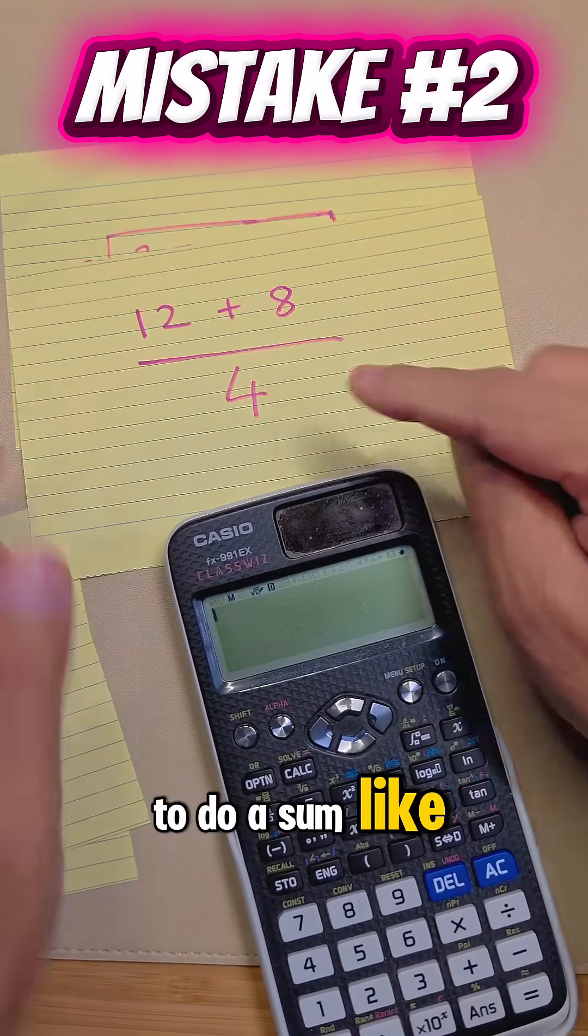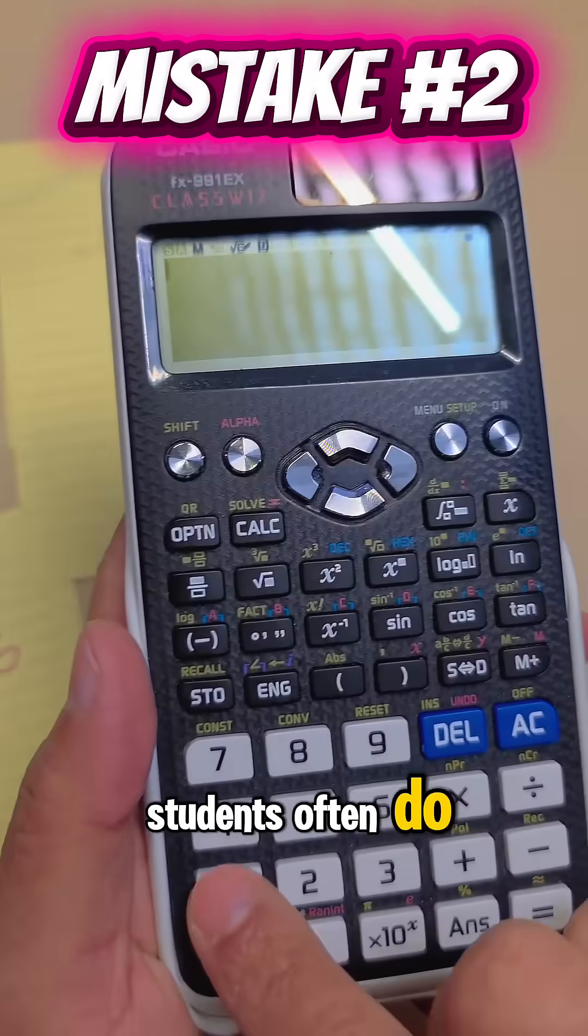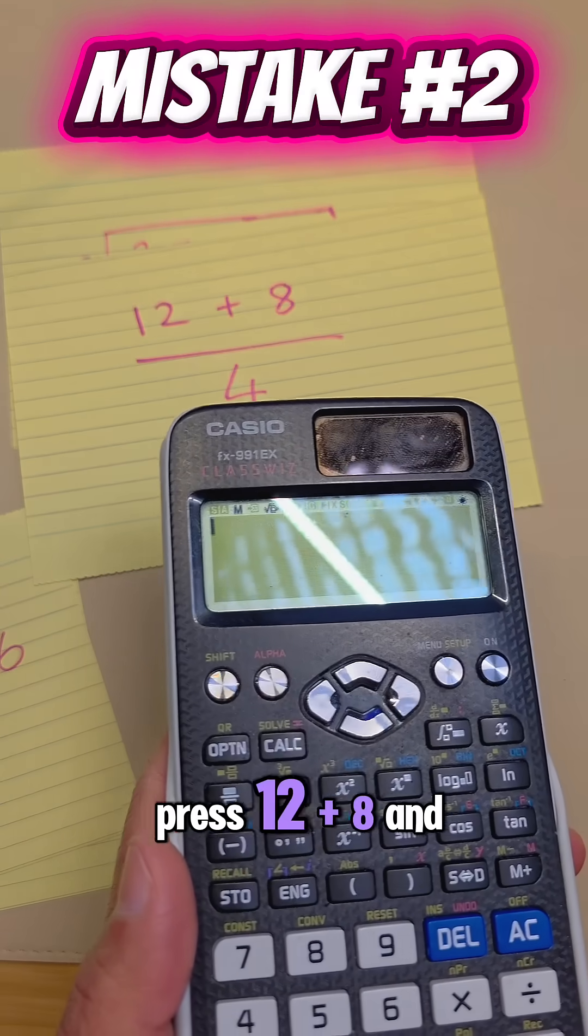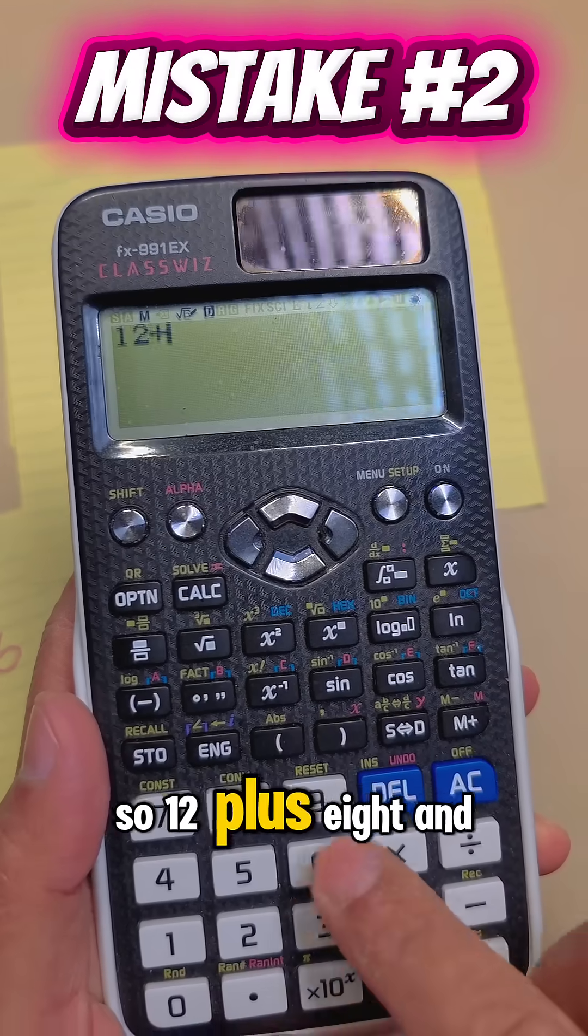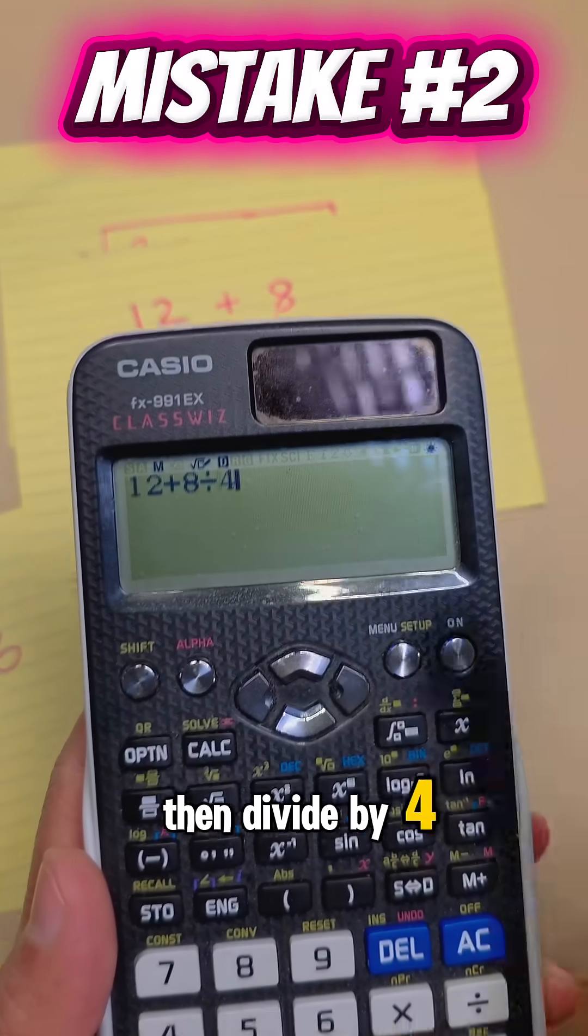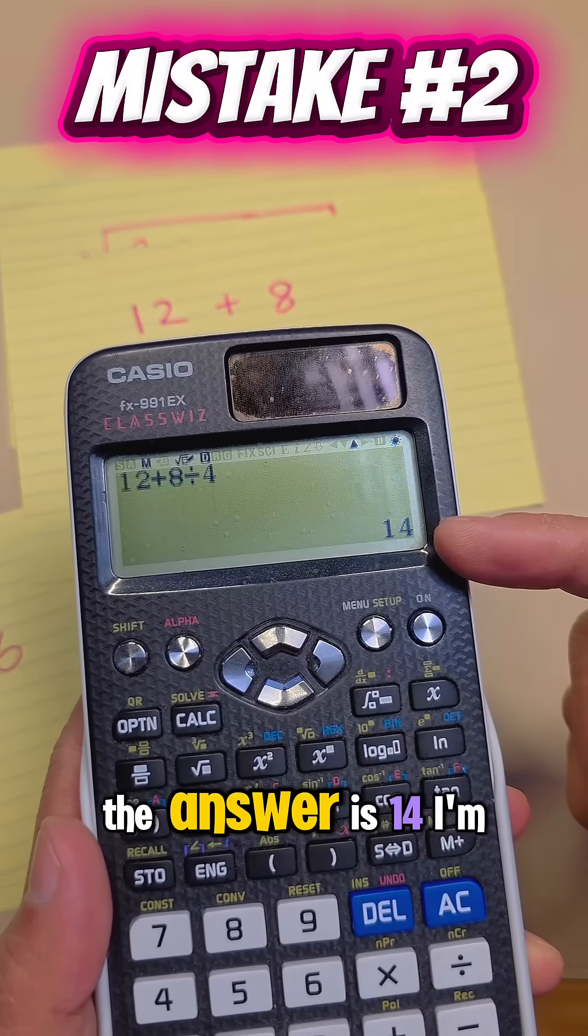The next one is trying to do a calculation like this. What students often do, the mistake is they will press 12 plus 8 and then divide by 4 like this. So 12 plus 8 and then divide by 4. This is not correct. Now if you look at here, the answer is 14.